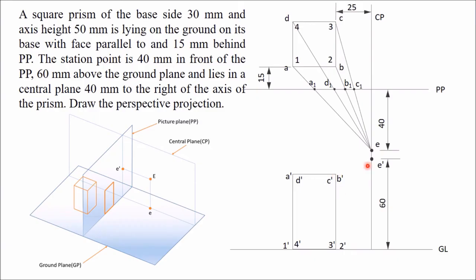In single-point perspective, e-dash is actually the vanishing point. All lines that are perpendicular to the picture plane and parallel to each other will appear to vanish at this point. Join e-dash with all the corner points of the front view rectangle.